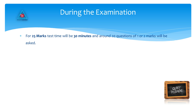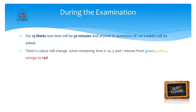For a 25-mark test, the time will be 30 minutes and around 20 questions of 1 or 2 marks will be asked. The timer's color will change when remaining time reaches 10, 5, and 1 minute — from green, to yellow, to orange, to red.